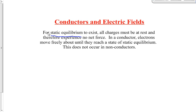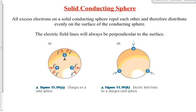At what point does this static equilibrium occur? What does the charge distribution of electrons look like in these conductors in order for this static equilibrium to occur?